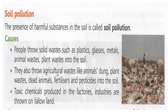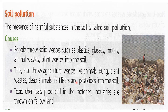They also throw agricultural waste. When the crop is harvested, after taking out the fruits, the remaining waste plants are thrown on the land — that also causes soil pollution — like animal dung, plant waste, dead animals, fertilizers and pesticides. Whichever agricultural waste is added into the soil, it causes soil pollution.